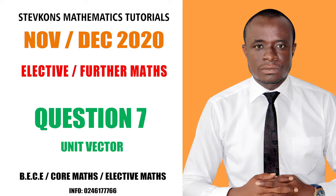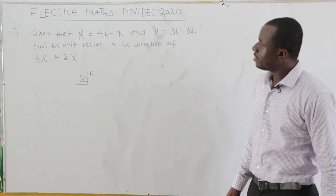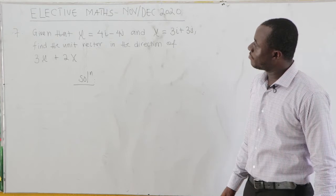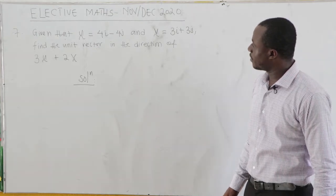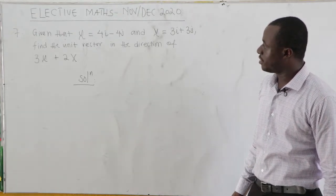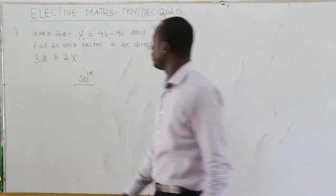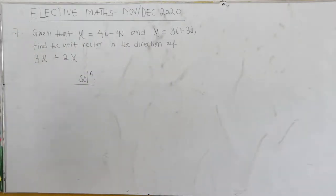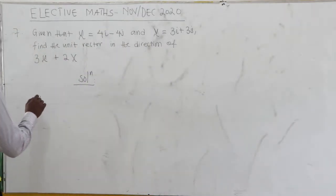November 2020, question number 7. Given that vector u equals 4i minus 4j and vector v equals 3i plus 3j, find a unit vector in the direction of 3u plus 2v.